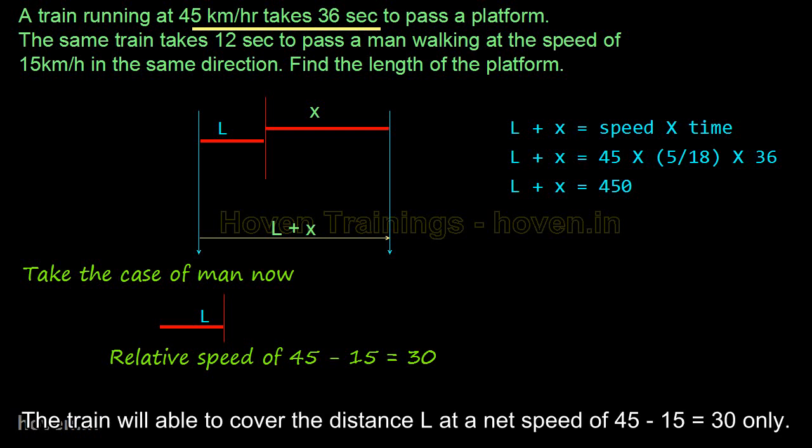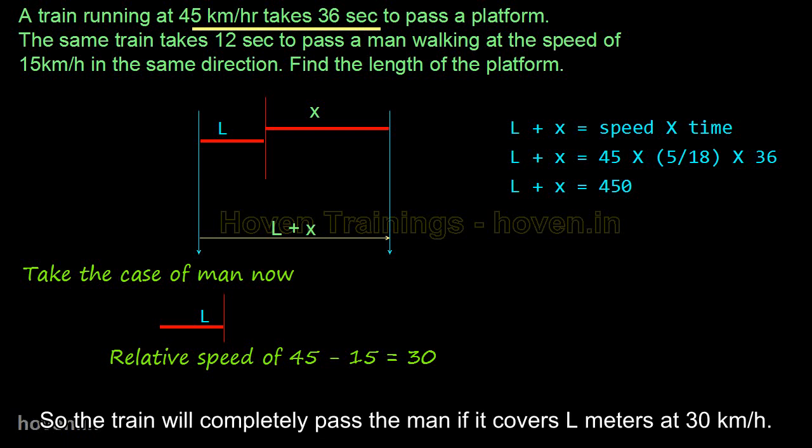The train will be able to cover the distance L at a net speed of 45 minus 15 equal to 30 km per hour only. So, the train will completely pass the man if it covers L meters at 30 km per hour.